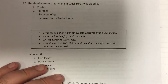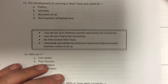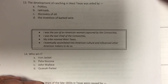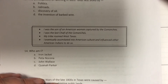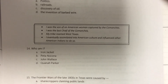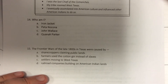Question 14: 'I was the son of an American woman captured by the Comanches. I was the last chief of the Comanche. My tribe roamed West Texas. I eventually assimilated into American culture and influenced other American Indians to do so. Who am I?' Answer choices: Iron Jacket, Peta Nakona, John Wallace, Quanah Parker.